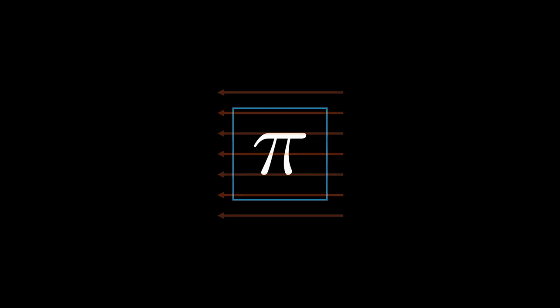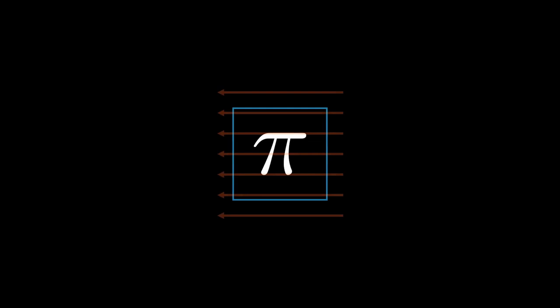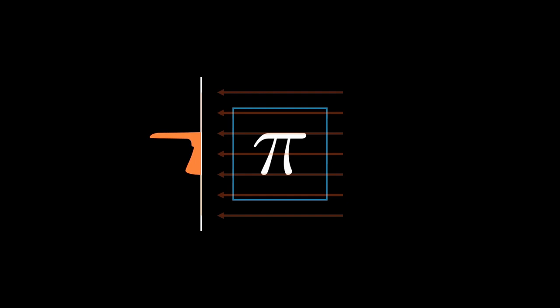When we now propagate light through this object, for example x-rays, we get the projection for a certain angle. This space is called the projection space and gets the color orange.